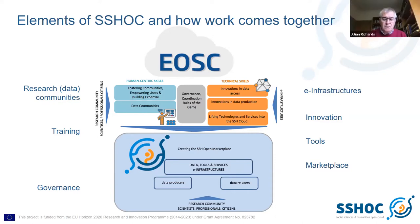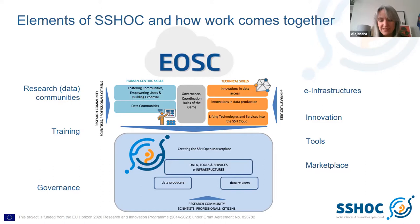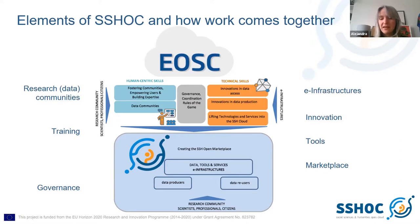SHOC is working to link research communities and infrastructures. On one hand, we want to engage and empower the research community by interconnecting them and building expertise through training networks and events. On the other hand, we are working with e-infrastructures to promote technical skills like innovation in data access and production, and linking technologies and services into the social sciences and humanities cloud. One key thing we're doing is creating the social sciences and humanities open marketplace, where high-quality data, tools, and services will be openly available for data producers and re-users. Alongside this, we will shape and implement governance for FAIR data that aligns with EOSC efforts.